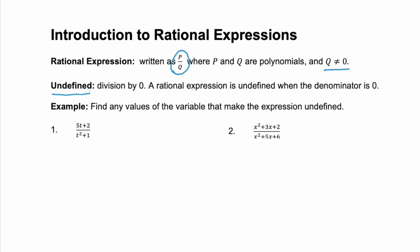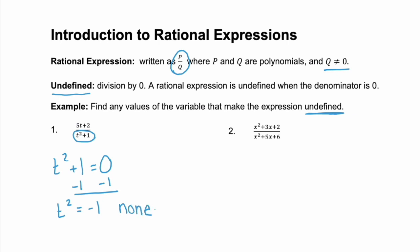Look at the first examples. Find any values of the variable that make the expression undefined. The keyword 'undefined' and the fact that you have a rational expression tells you to just look at the denominator. We want to look at that denominator, t squared plus one, and determine when it would be zero. So we need to solve this for t. Subtract one from both sides and you get t squared equals negative one. Well, when does t squared ever equal negative one? Never — because whenever you square something, it becomes positive. So there are no values for the variable t that will ever make this rational expression undefined.